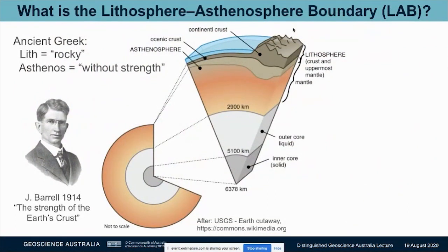Let's think about what the lithosphere-asthenosphere boundary is in a little more detail. The term was coined by an American geologist called Barrel in 1914 — astonishing, given this was even before the theory of plate tectonics was established. Lithosphere means 'rocky sphere.' Barrel was concerned about the strength of the plate — it can support loads such as mountains, but once you get over a certain size of load, that load is no longer supported just by strength, and you get a deflection of this layer called the lithosphere. He inferred that beneath it must be a layer called the asthenosphere, which accommodates that deflection, building on concepts established by Airy and before him Archimedes.